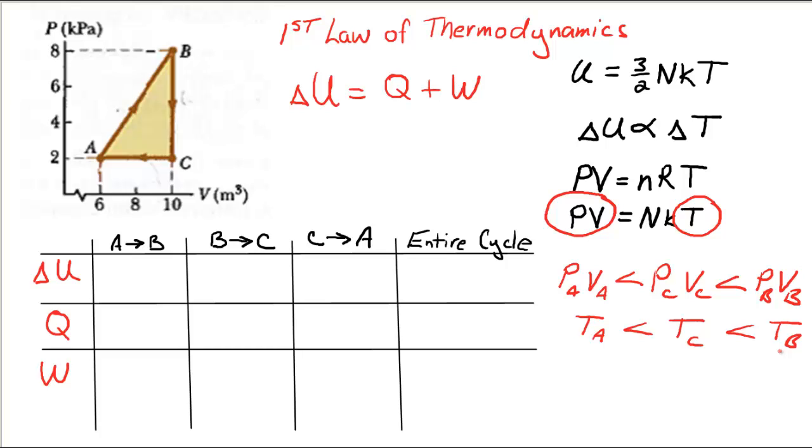Now what about the work? Work is just the area under a PV graph. So we've got negative work when we go from A to B, because the gas is expanding. So why don't we fill that out immediately? Negative work. And it'll be represented by the area underneath the curve. We can calculate that if we like.